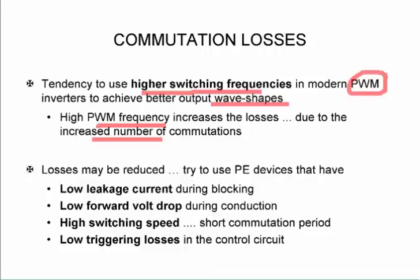So a high pulse width modulation frequency will increase the losses because of the increased number of switching cycles. Now the question is how can we reduce the losses? By having a power device with a low leakage current, and normally the leakage current is quite small so it's not going to make a significant difference.